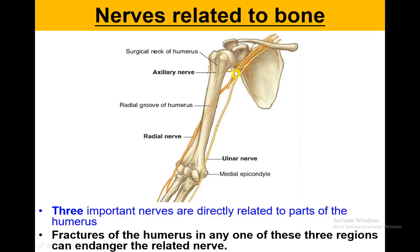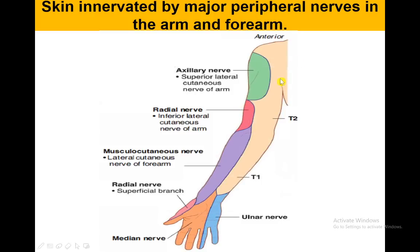Nerve related to bone: as you can see, the nerves are passing at specific points — at the surgical neck posteriorly you can see the axillary nerve, in the mid-shaft the radial nerve, laterally at the epicondyle the radial nerve is also passing, and at the medial epicondyle we have the ulnar nerve. Injury at these points may cause trouble to the nerve. The skin innervated by the major peripheral nerves in the arm and forearm corresponds to the axillary, radial, musculocutaneous, median, and ulnar nerves — these patches are important to remember for sensory injury assessment.